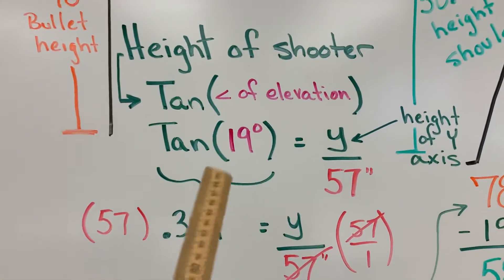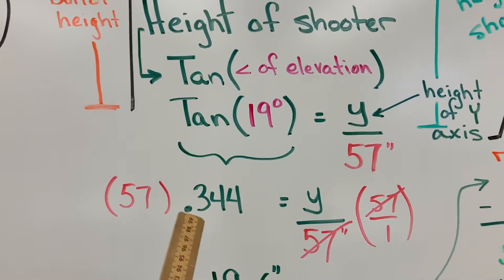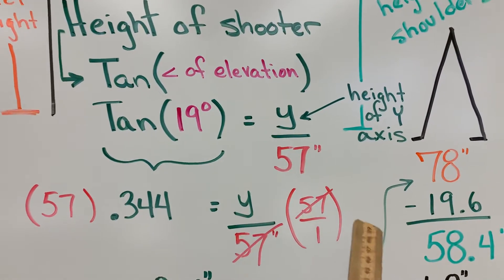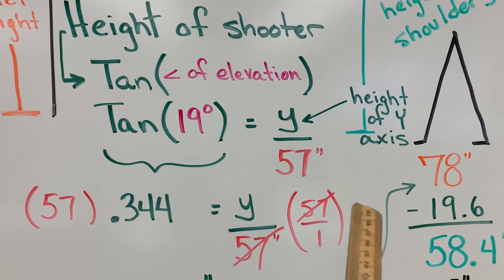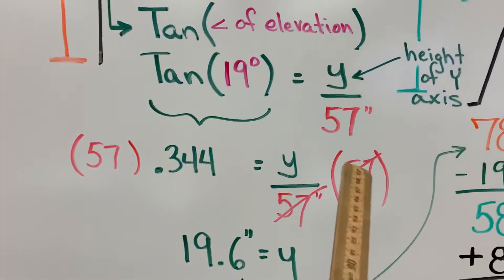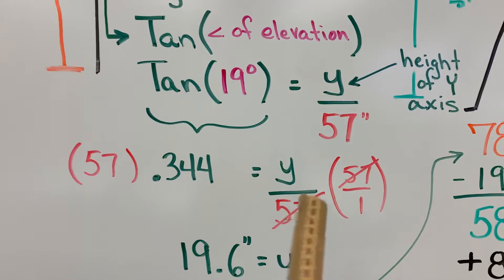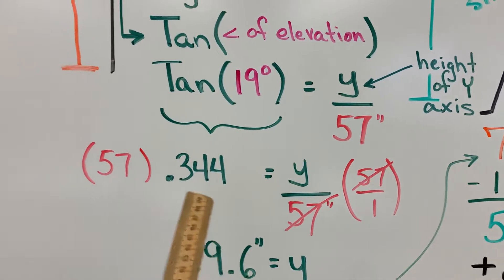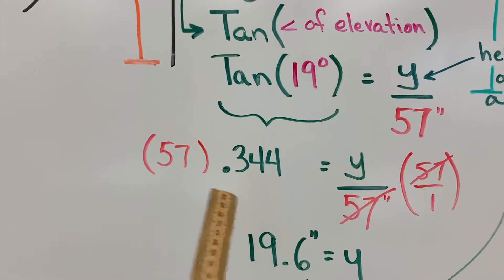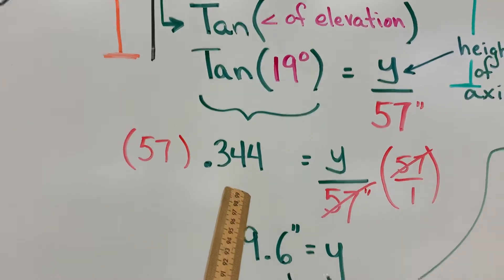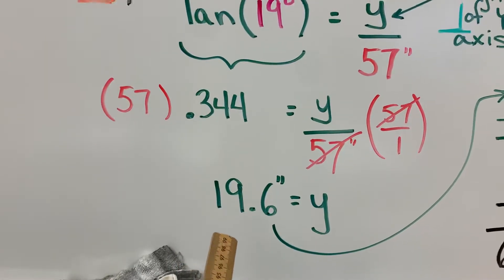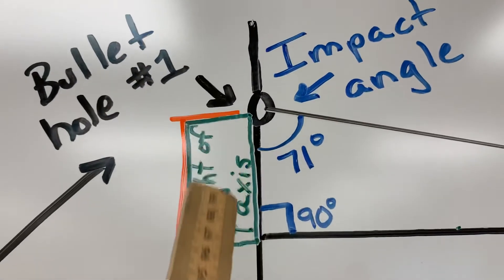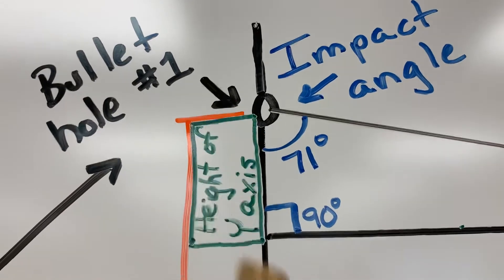So tangent of 19 is 0.344. To get Y by itself, because this is Y over 57, Y over the footprint distance, I'm going to multiply both sides by 57. 57 and 57 cancel out, it gives me Y all by itself. 57 times 0.344 gives me 19.6 inches, which is this height right here.